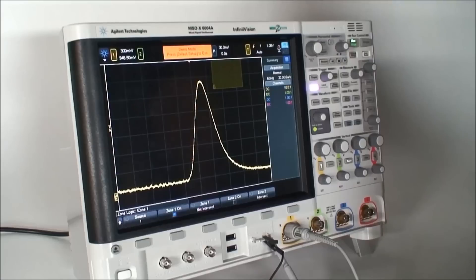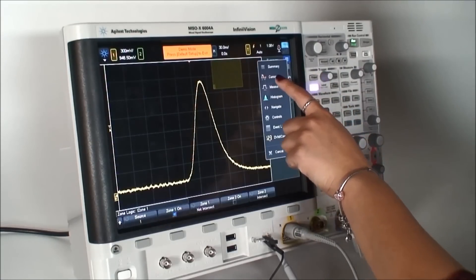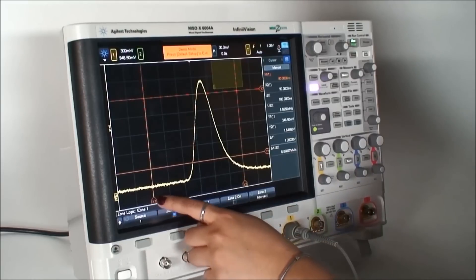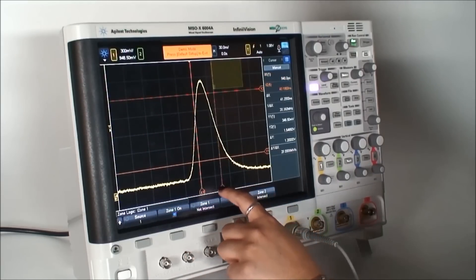Let's use the touchscreen dual cursors to measure the pulse width. We can simply drag the cursors onto the pulse and measure the pulse width, which is about 40 nanoseconds. Using zone triggering has helped us to quickly isolate the glitch and characterize its width.